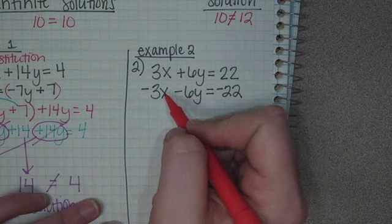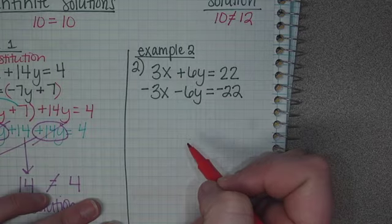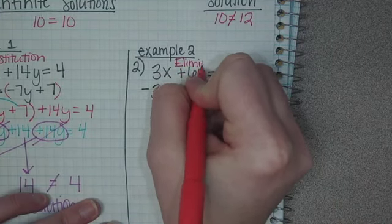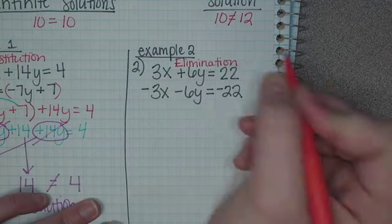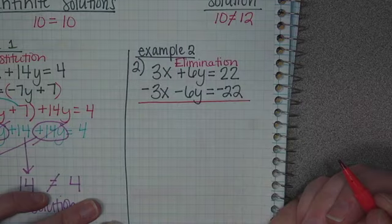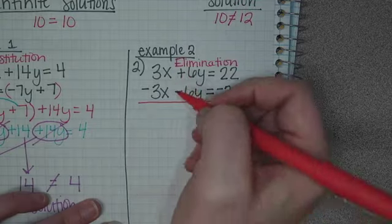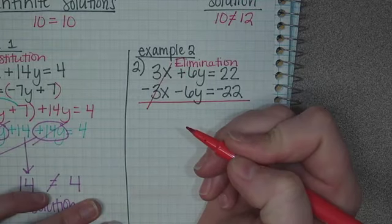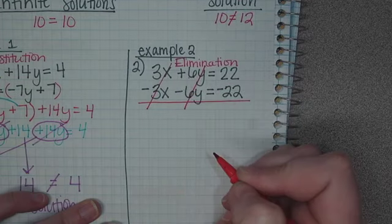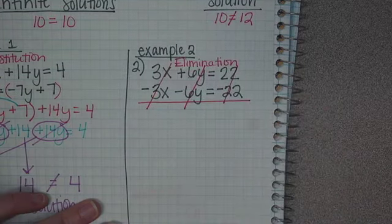Notice this one. It's x over x, y over y, equal over equal, number over number. This one, you're going to do elimination or combination. We're going to combine these two together. What is 3 minus 3? Canceled out. 6 minus 6 is canceled out. And 22 minus 22 is 0, cancels out as well.